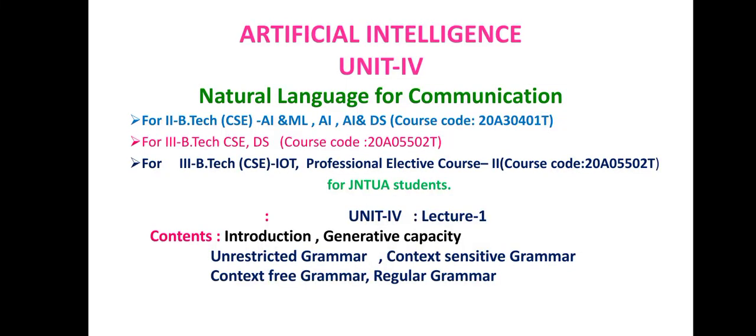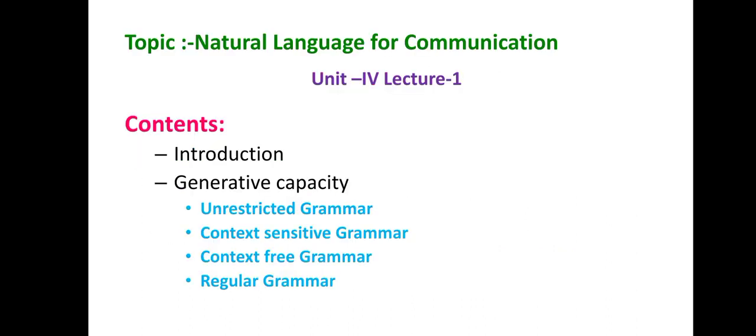Welcome to today's video session for Artificial Intelligence, Unit 4 - Natural Language Communication. We are going to cover the introduction part and the generative capacity, under which we will discuss four types of grammar: unrestricted grammar, context sensitive grammar, context free grammar, and regular grammar.